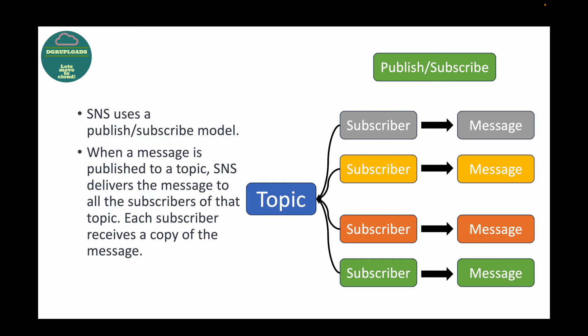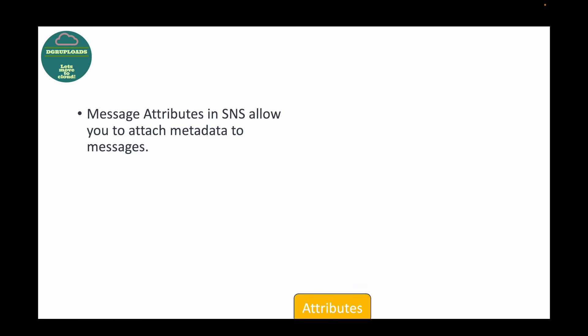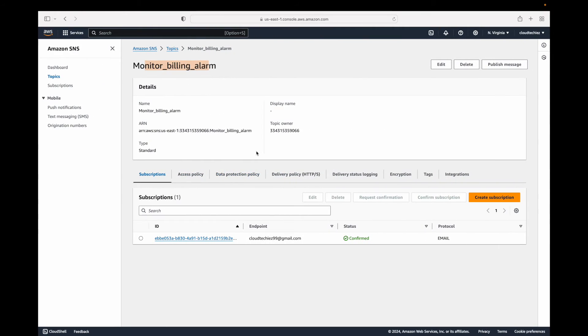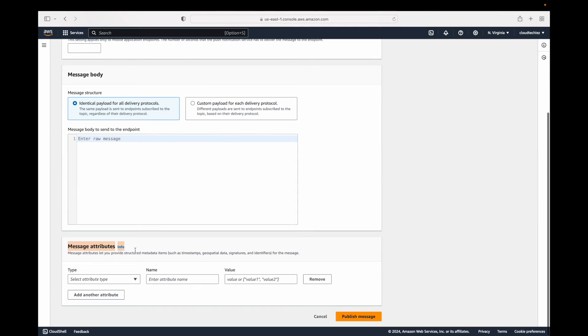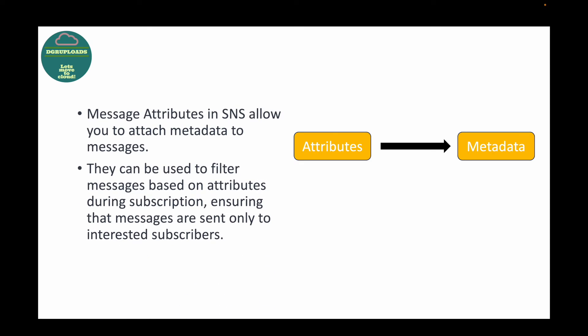Whenever we publish a message to a topic, SNS sends out a copy of that message to all subscribers subscribed to that topic. Moving on: what is the significance of message attributes in SNS? Message attributes are used to add metadata. When publishing a message, you can add attributes — additional information or metadata for that message. These can be used to filter messages based on attributes during subscription, ensuring messages are only sent to interested subscribers.